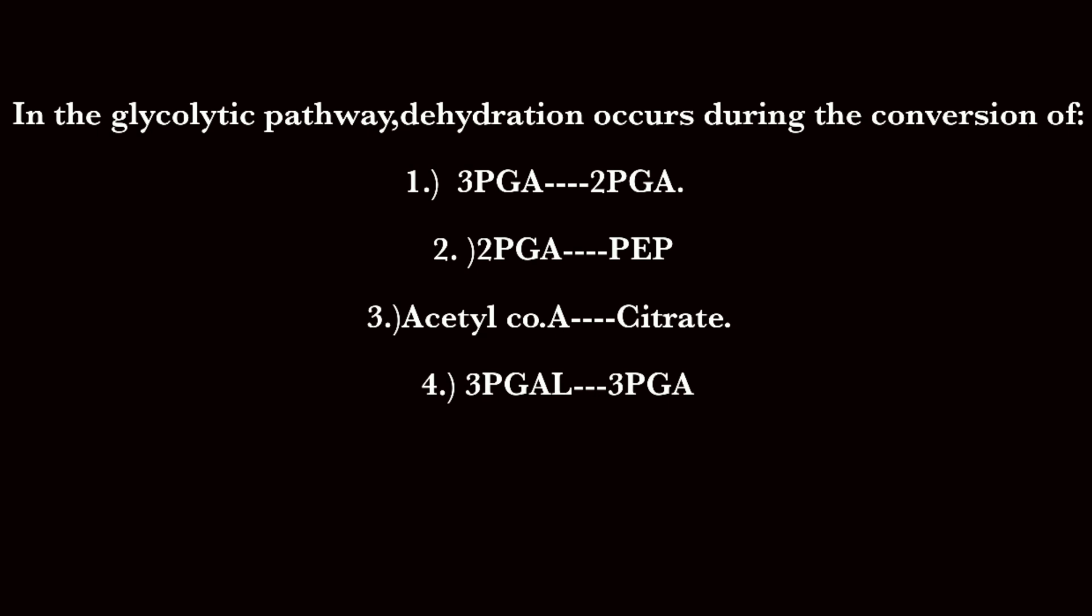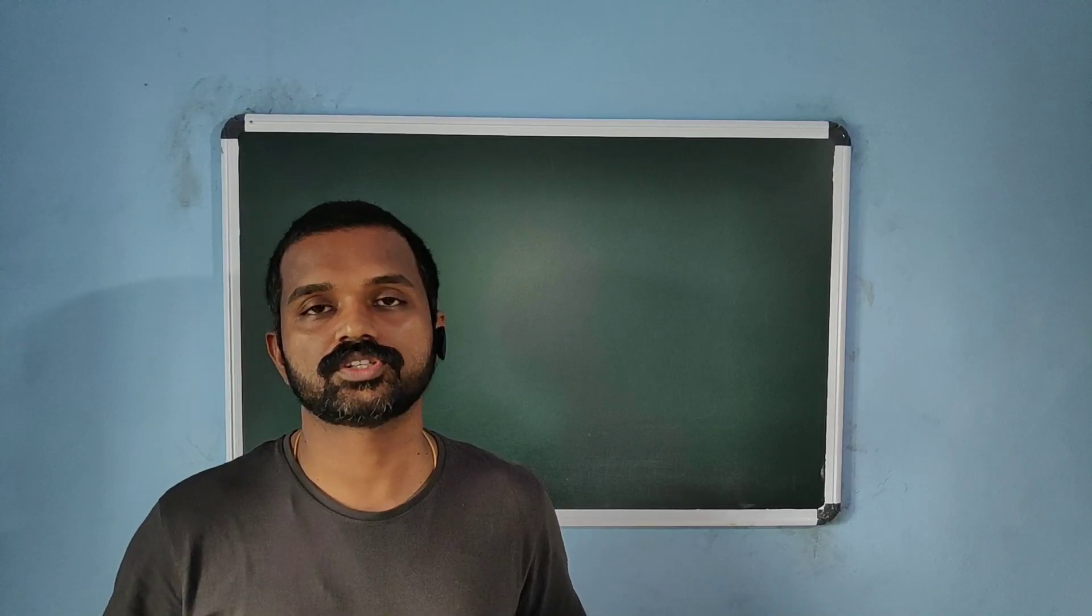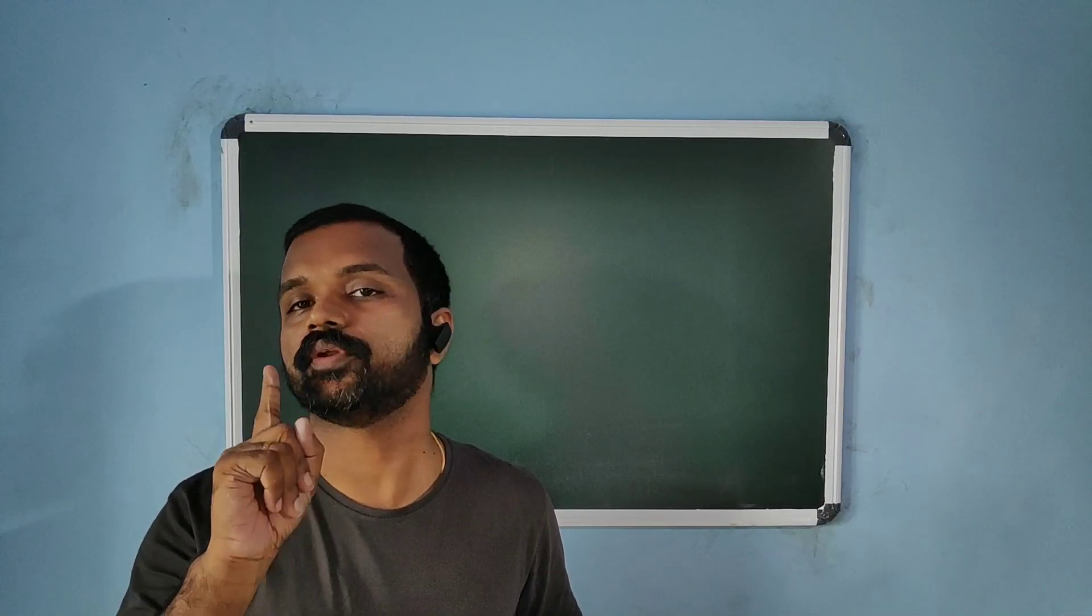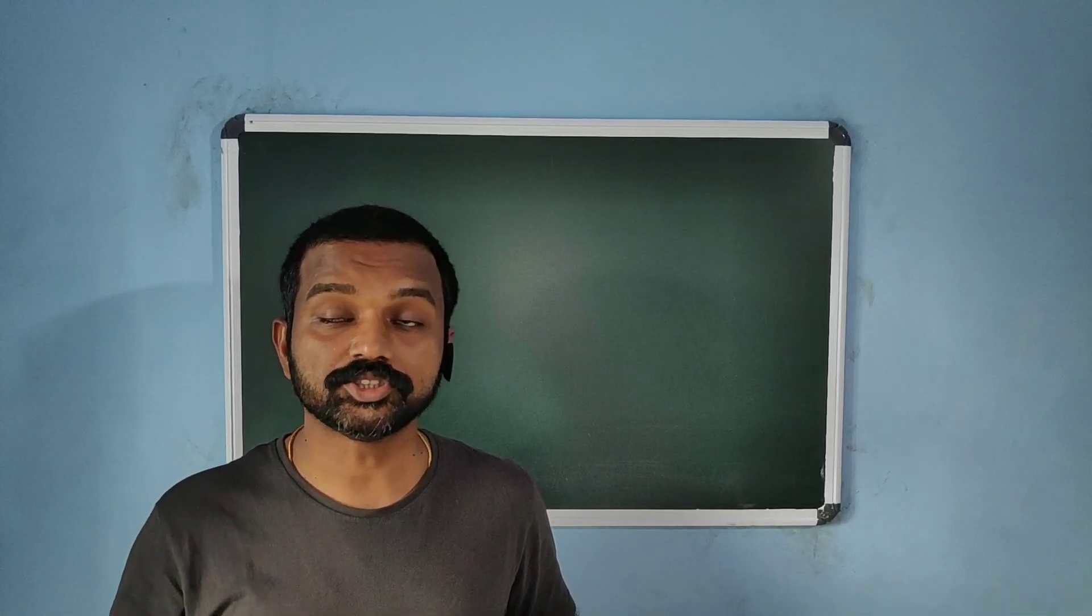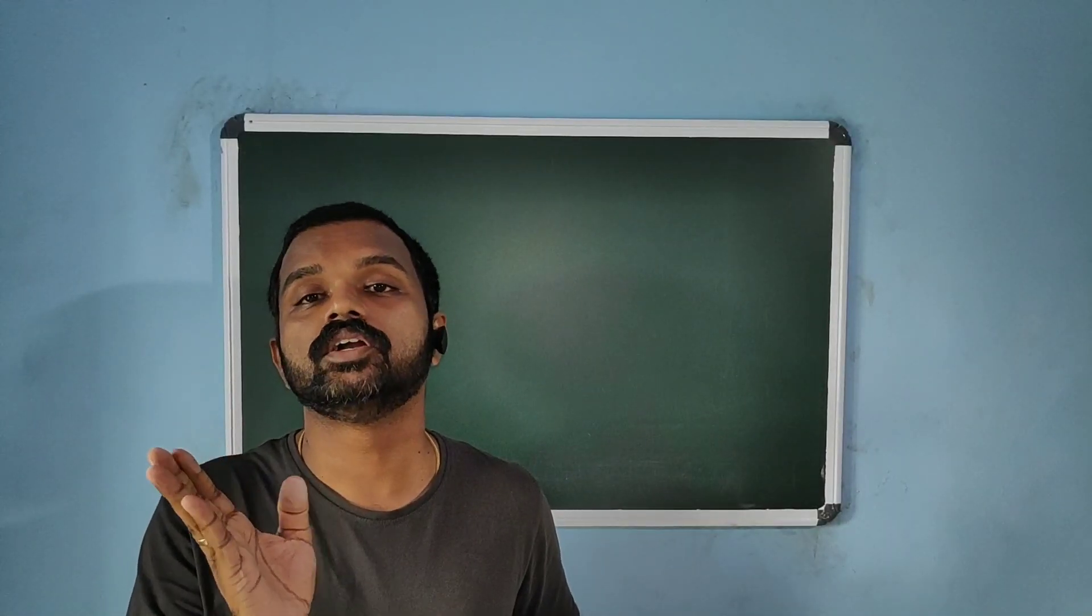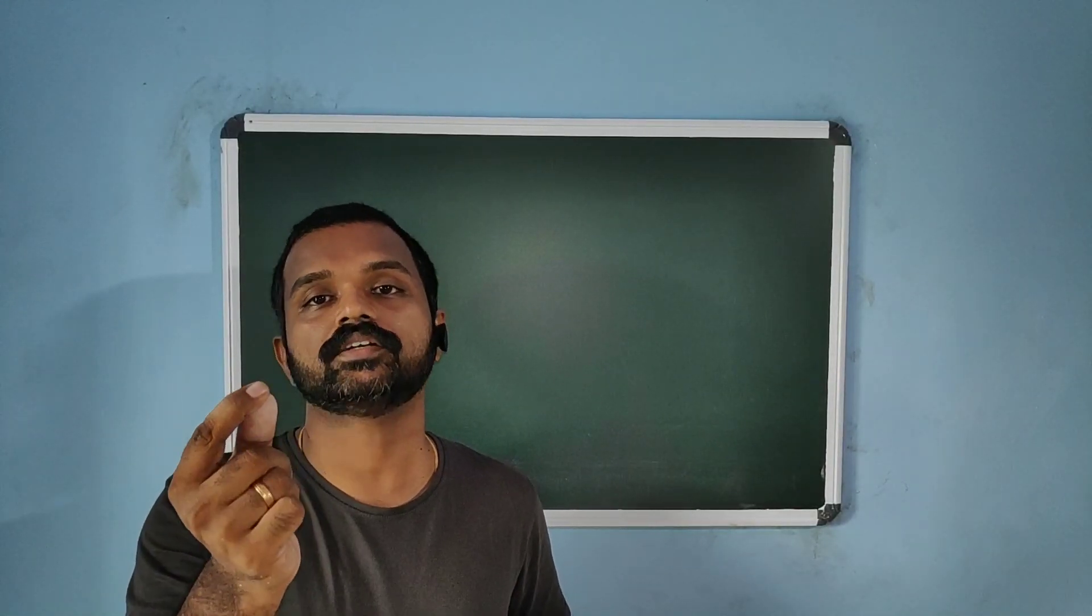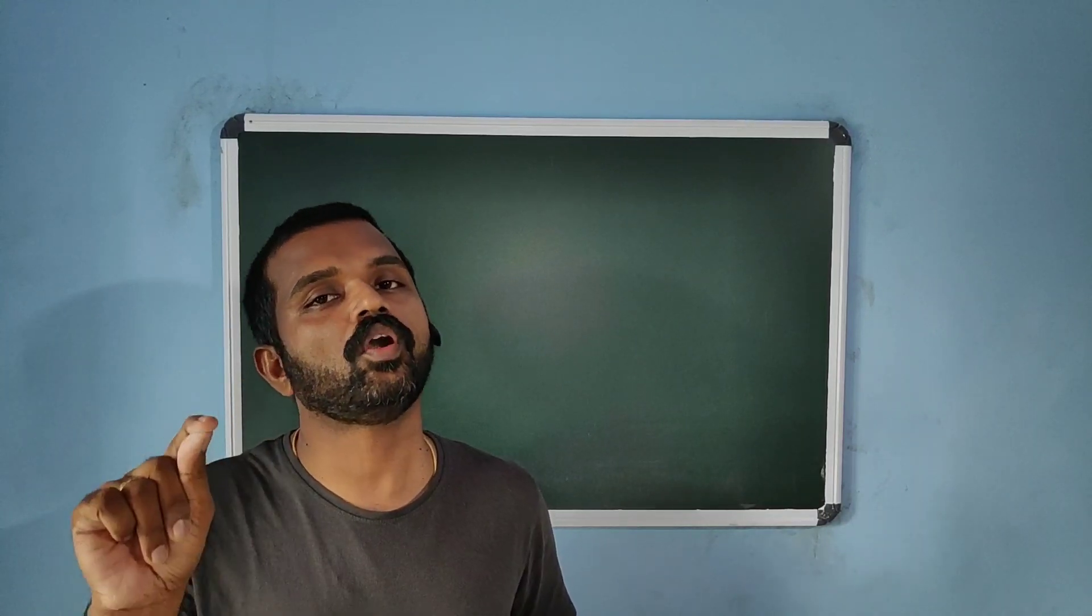In the glycolytic pathway, dehydration occurs during the conversion of... In glycolysis, dehydration occurs only during one step: during the conversion of 2-PGA (2-phosphoglycerate) to PEP (phosphoenolpyruvate).